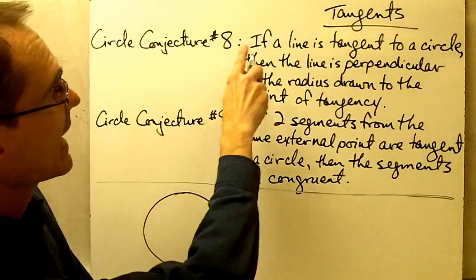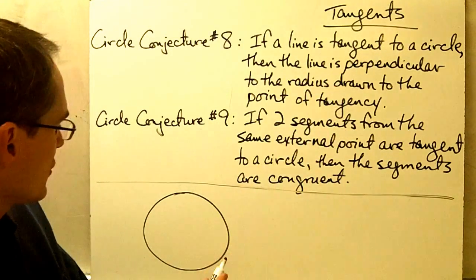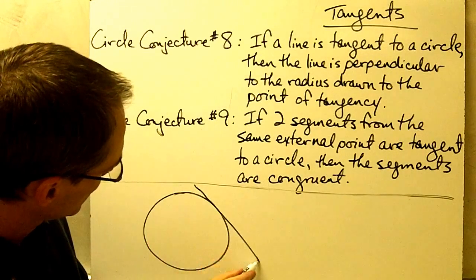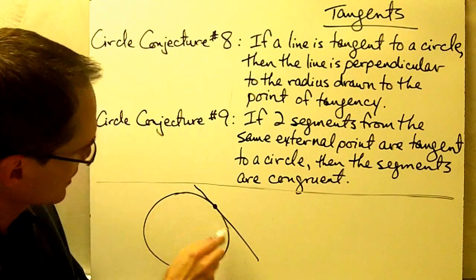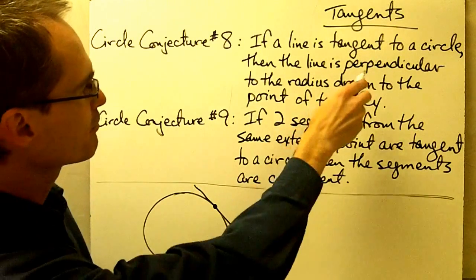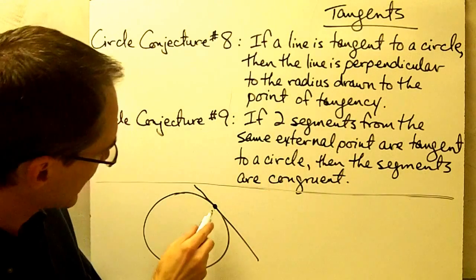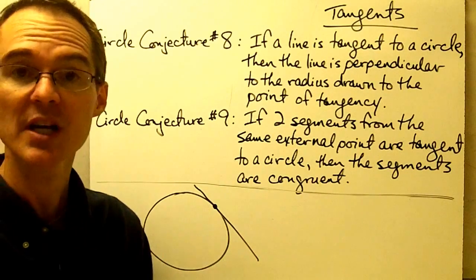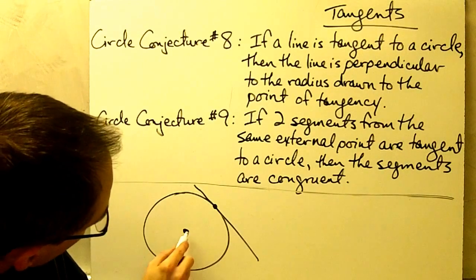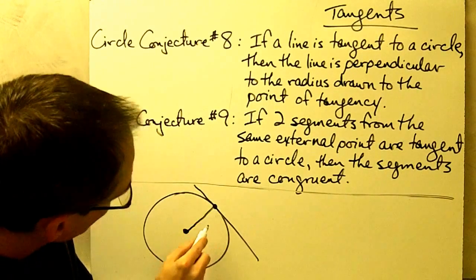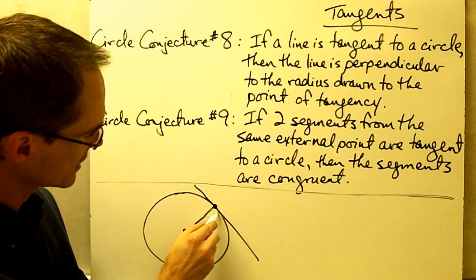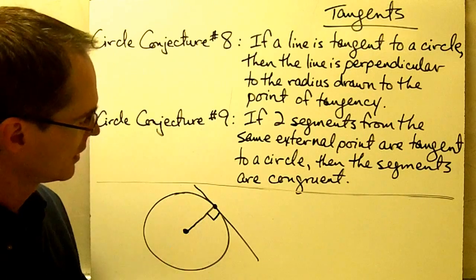I've got a circle here, and if a line is tangent to a circle — so let me draw a line tangent to this circle — it touches the circle at exactly one point. Here's a line that's tangent to the circle at this point. Then this line is perpendicular to the radius drawn to the point of tangency. This point right here where it touches is called the point of tangency. So if I draw a radius on my circle to that point, this conjecture tells me that the radius drawn to the point of tangency is going to be perpendicular to the tangent line.